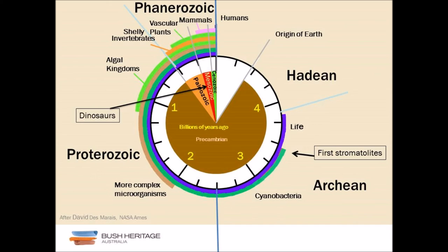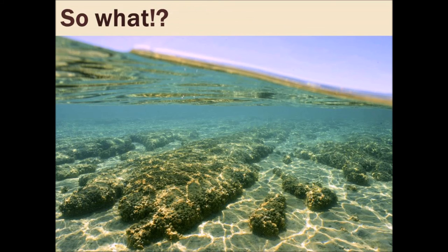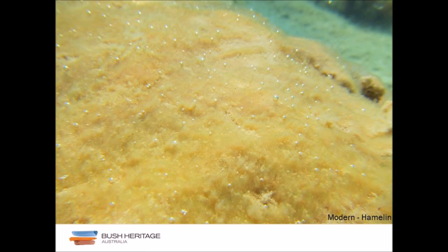So what is the big deal with stromatolites? Oxygen. The big deal with stromatolites is oxygen. This is an image from a subtidal stromatolite in Hamlin Pool — a stromatolite-building microbial community that is actively photosynthesizing, and you can see all the little oxygen bubbles coming off the surface.